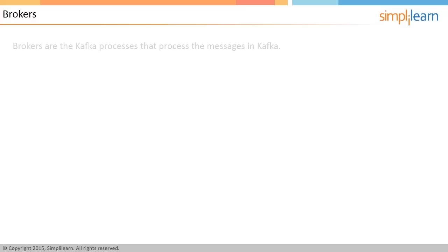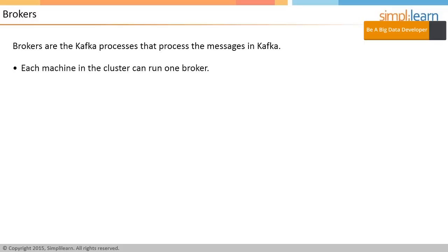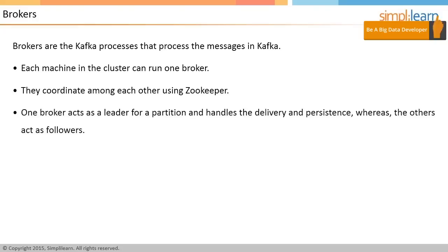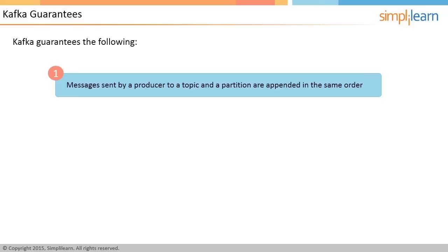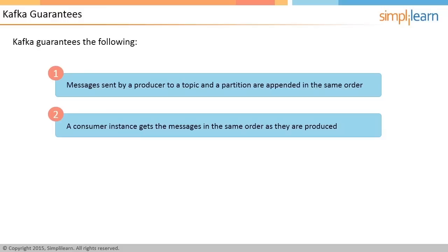Brokers are the Kafka processes that process the messages in Kafka. Each machine in the cluster can run one broker. Brokers coordinate among each other using ZooKeeper. One broker acts as a leader for a partition and handles delivery and persistence, whereas the others act as followers. Brokers receive messages from the producer and send them to consumer groups. Kafka guarantees: Guarantee 1 — messages sent by a producer to a topic and partition are appended in the same order, ensuring time order is maintained strictly. Guarantee 2 — a consumer instance gets messages in the same order as they are produced, meaning messages are never out of order.